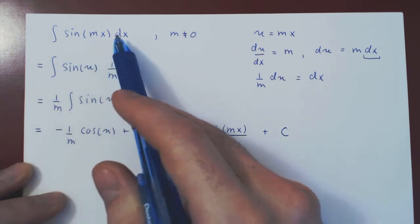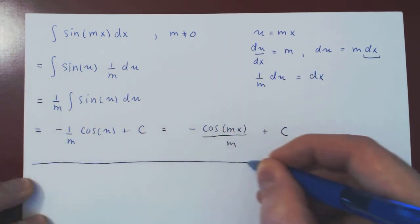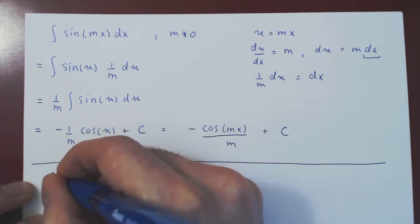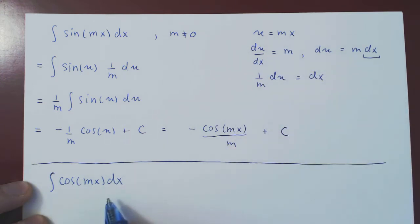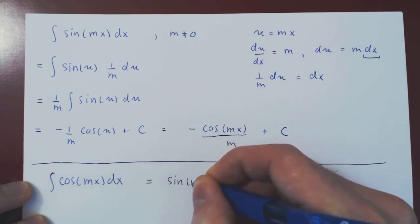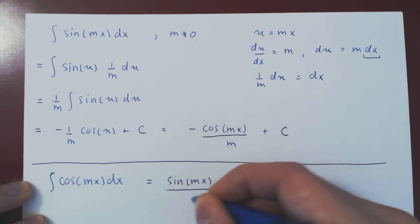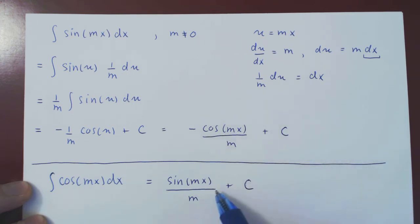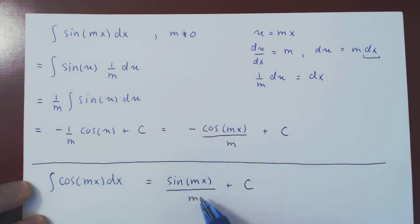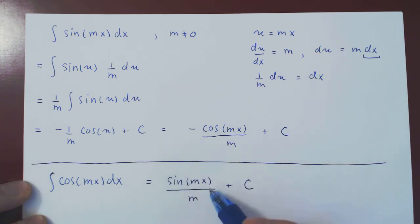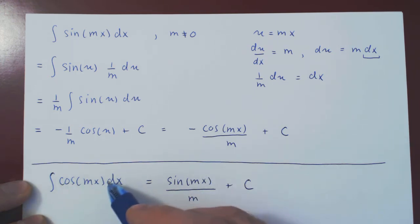We can do the same thing with cos of mx. If you integrate cos of mx with the same substitution, letting u be mx, you arrive at sine of mx over m plus c. You can verify this in two ways: either carry out the substitution, or differentiate the answer and confirm you recover cos of mx, the original function.